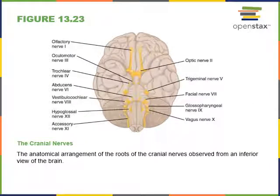The cranial nerves are numbered one through twelve. Cranial nerve one, the olfactory nerve, carries the sense of smell from the olfactory epithelium of the superior nasal cavity into the olfactory bulb. Cranial nerve two, the optic nerve, carries sensory information—specifically the sense of vision from the retina—into the optic tract that continues to the thalamus.